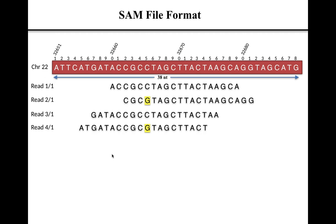Before going into the details of SAM file format, I would like to present a graphical representation of reads aligned to the reference sequence. In this graphical representation, the red bar represents a reference sequence, which is a subsequence of chromosome number 22. This subsequence starts at position 32,651 on chromosome 22, meaning the second base occupies position 32,652, and so on.